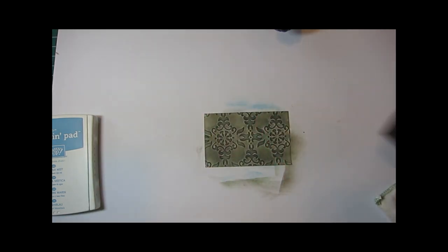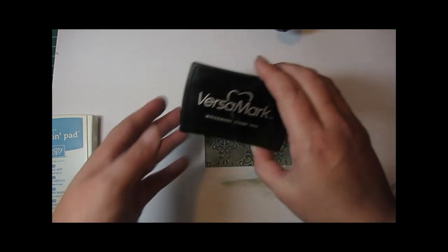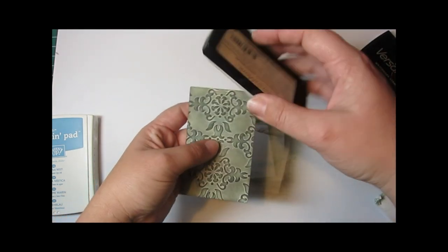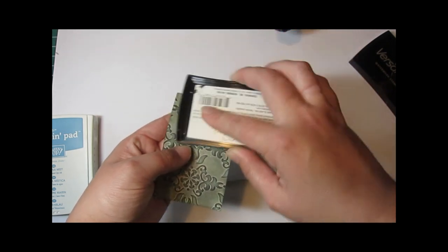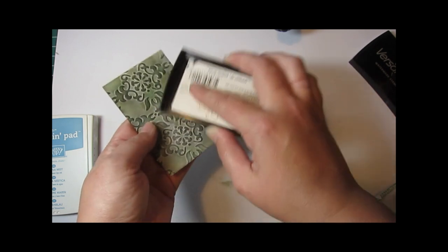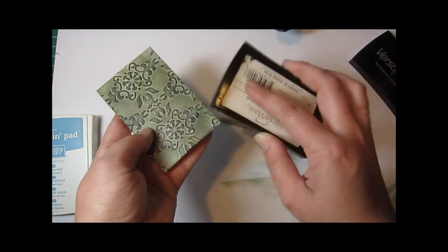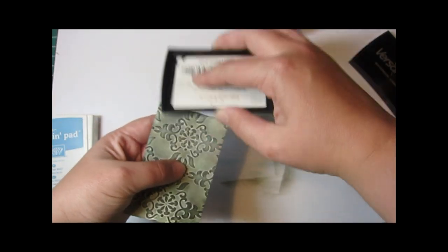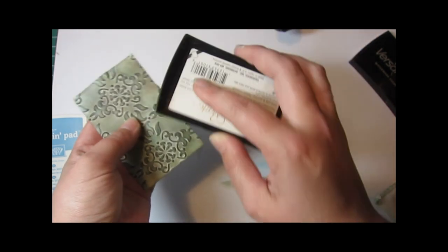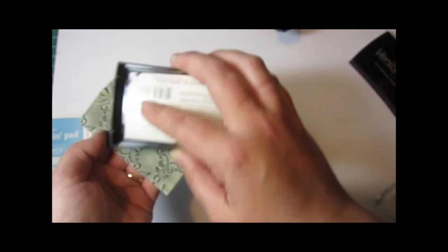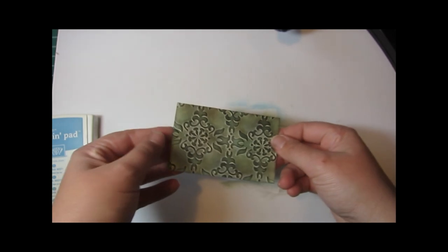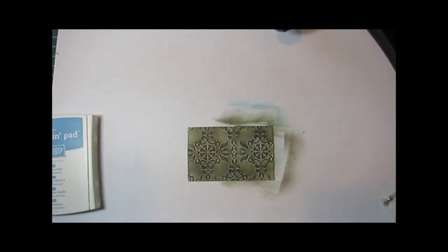Now we're going to use Versamark clear embossing ink and for this you just want to kind of apply it by the raised areas but just randomly because with the patina you just want a little bit of the metal to be kind of peeking through. So just a little bit here and there. You don't want even coverage throughout.